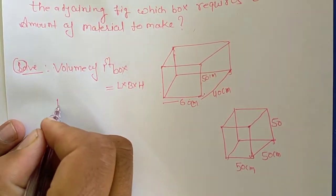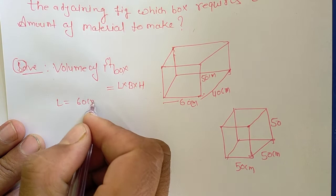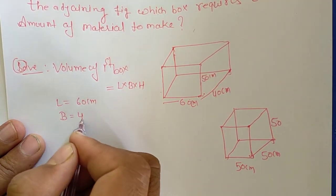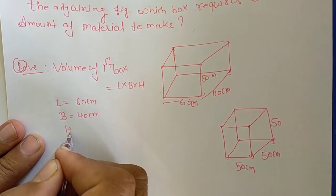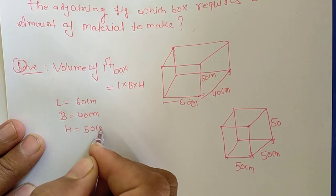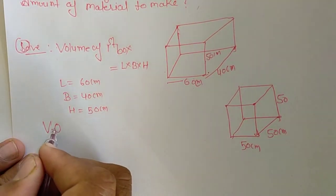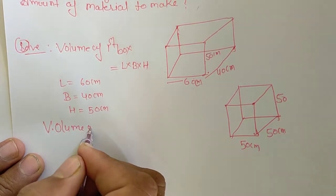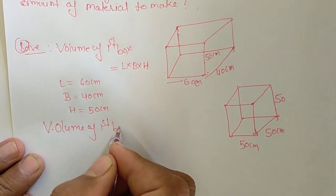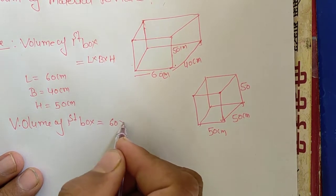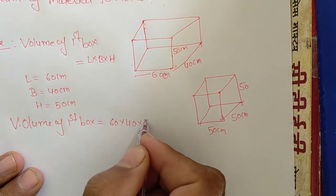Okay, so L equal to 60 cm, breadth 40 cm, and height 50 cm. Volume of first box is equal to L value is 60 into 40 into 50.